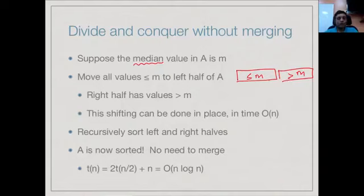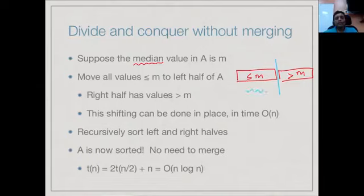We have to do the shifting, but the claim is that we can do it in linear time. Assuming we can pick a value m which is the median and shift everything smaller than m to the left, this is roughly the halfway point because m splits the array into two equal halves. Then we recursively sort each half. There is no need to merge because everything on the left is already smaller than everything on the right, so we can assume the array is sorted. By the same analysis as for Merge Sort, we have the recurrence T(n) = 2T(n/2) + n, which is O(n log n).